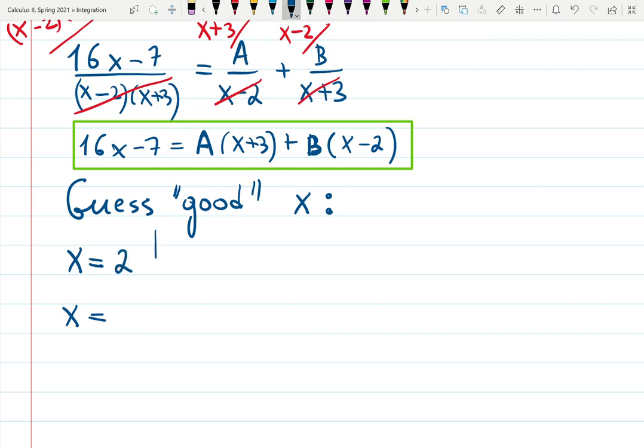For example x equals 2 looks like a good idea. If x is equal to 2 it's going to be 32 minus 7 equals A times 2 plus 3, that's 5, and B is multiplied by 0. So A follows right away from here. 32 minus 7 divided by 5 is 5, because 32 minus 7 is 25. Put it in the box because later you might have A, B, C, D, E and it's nice to later find them easily.